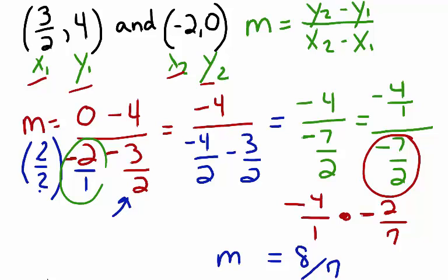So the slope of the line passing through points 3 halves, 4, and negative 2, 0, is 8 over 7.